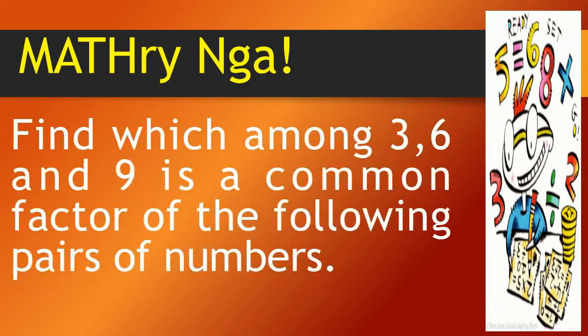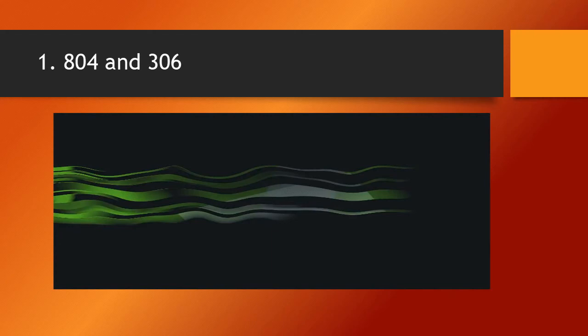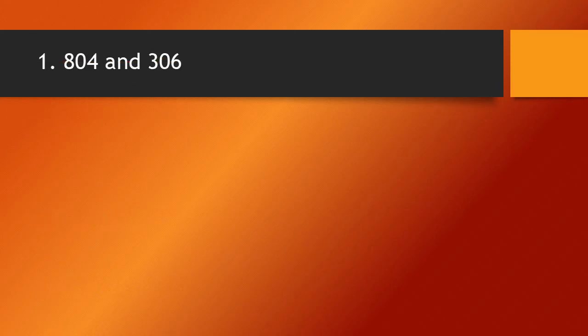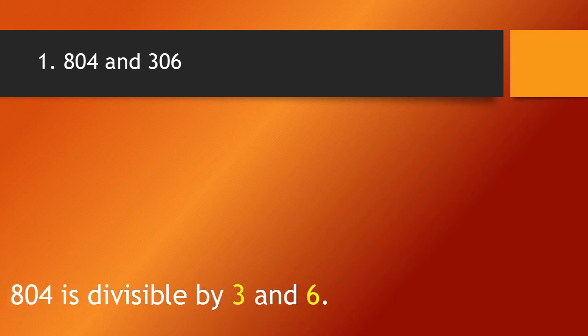Now, we are going to find which among 3, 6, and 9 is a common factor of the following sets of numbers. Are you ready? Let's start! Our first set of numbers: 804 and 306. 804 is divisible by 3 and 6 because the digits 8 plus 0 plus 4 equal 12, which is divisible by 3 and 6.